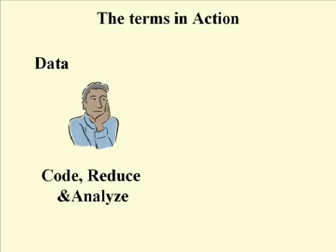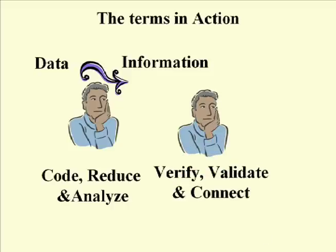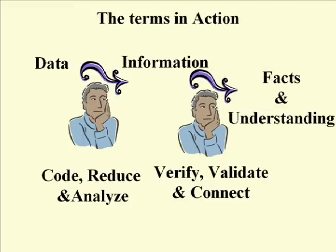If there is a connection, you want to make sure that it is valid. Once you have that connection, you move into information. Information is then accumulated and shared such that it can be verified, validated, and connected such that this information you have can be used to move forward and eventually become facts and understanding.